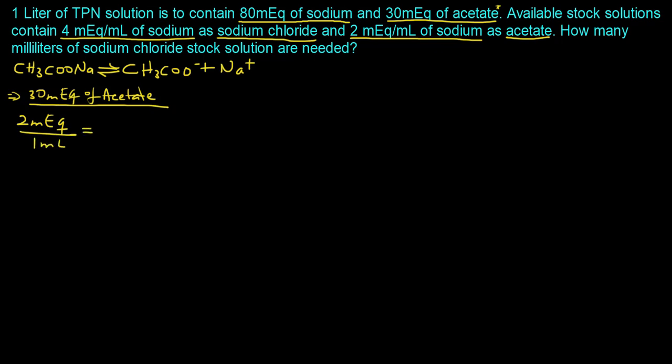And so because you are interested in supplying 30 mEq, we can basically compute what that volume is going to be. So if we solve for our unknown we will have 1 mL times 30 mEq divided by the 2 mEq and that will give us 15 mL.